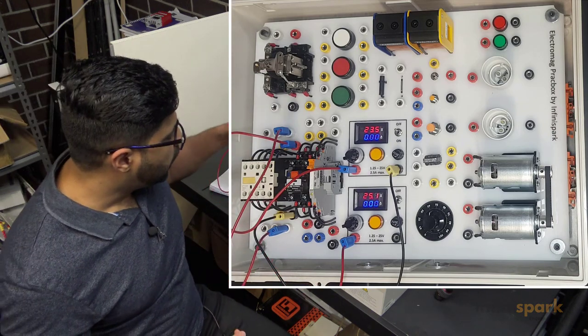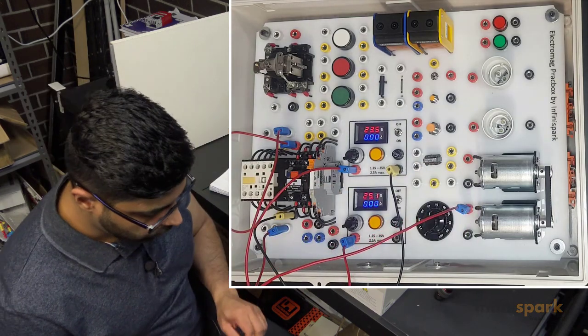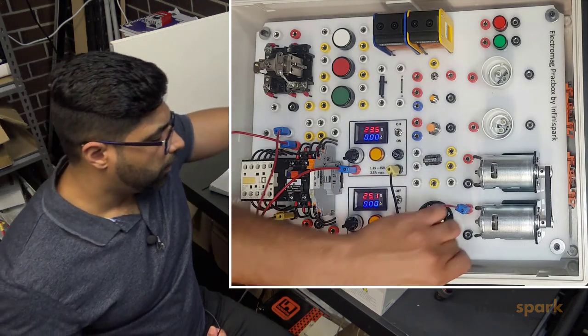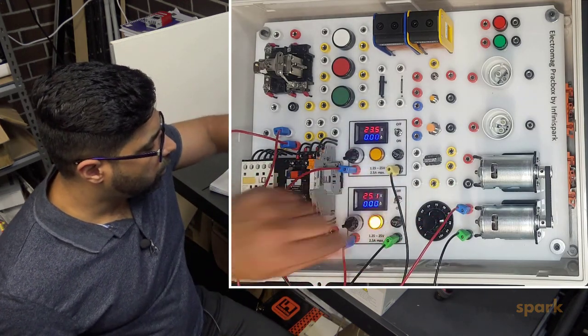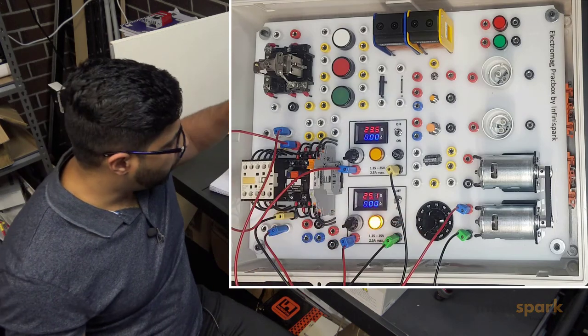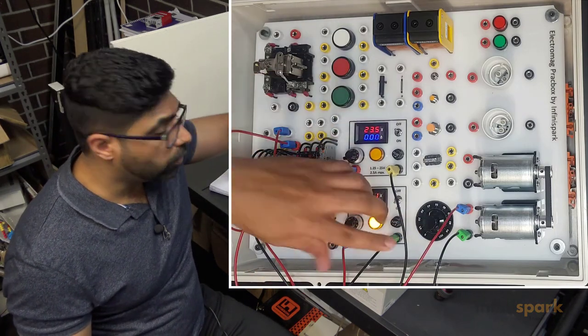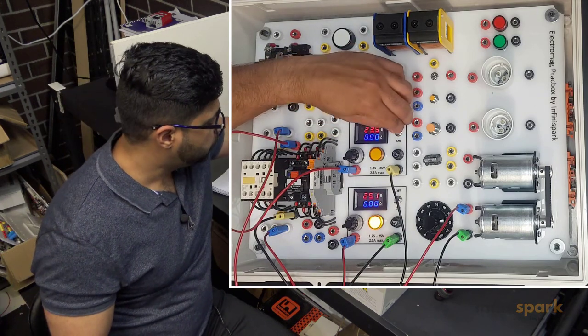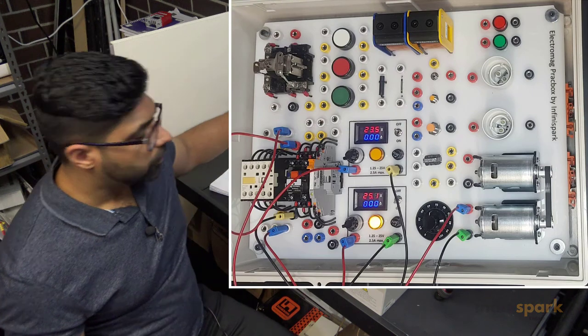I'm going to try and power the motor through this. Negative of the motor goes to the power supply. Let's turn this on. You see how it didn't work? That's because the contactor is disabled or disengaged. Let's turn it on to see if the motor turns on.